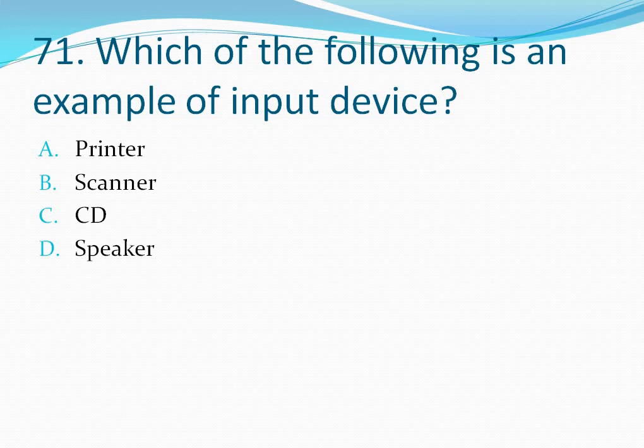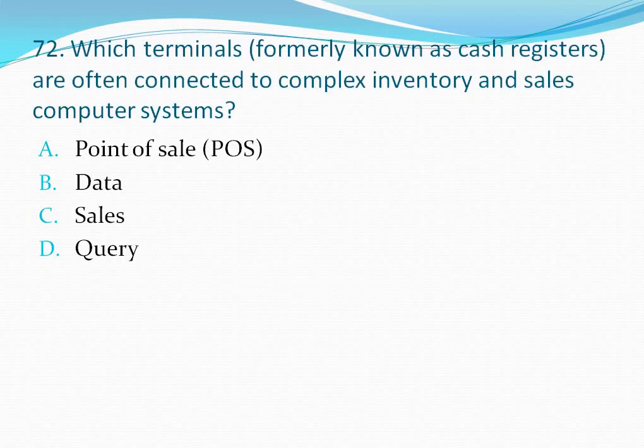Question number 71: Which of the following is an example of an input device? Your options are: option A printer, option B scanner, option C CD, option D speaker. The correct answer is option B — scanner.